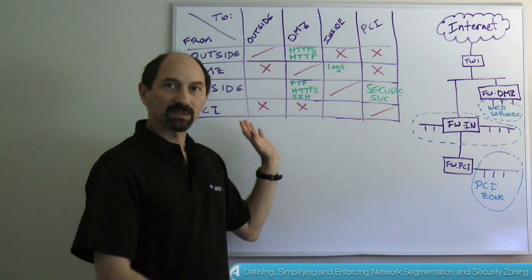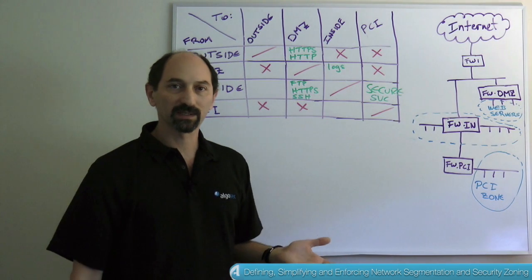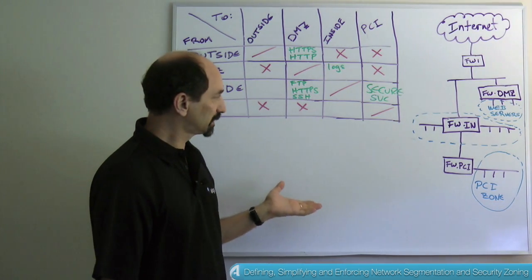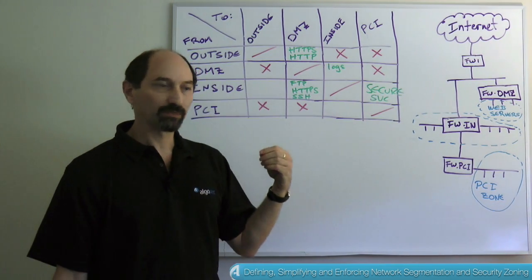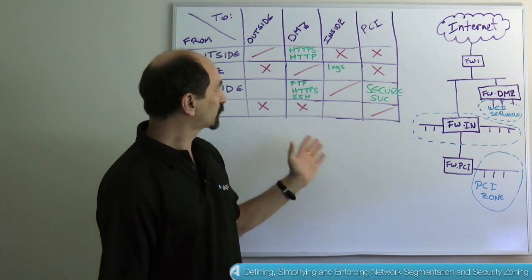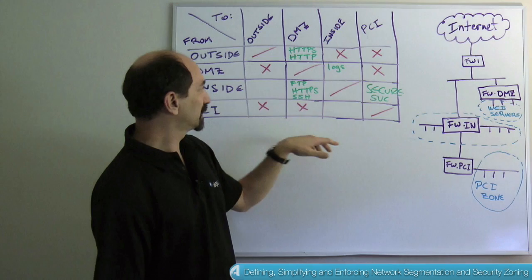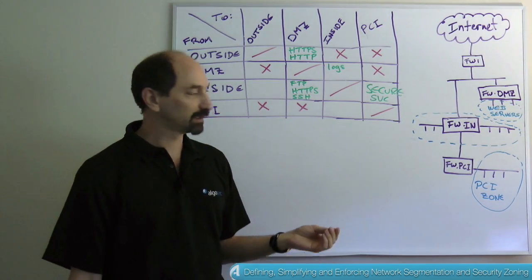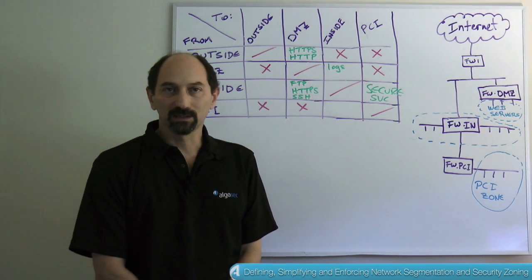And how do you use such a matrix? Well, one way of using it is when a new change request is being handled by the system or by the network team, they just need to know where the traffic is coming from. So which zone the traffic would be coming from, which zone the traffic would be going to, and then you look up in the matrix and see whether the protocols and services that are being requested are allowed by the high level policy.